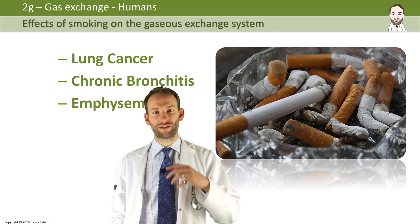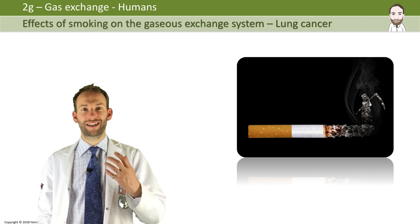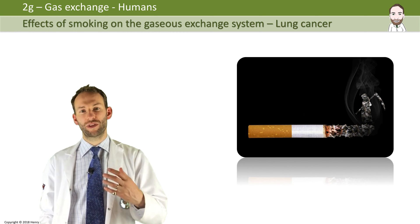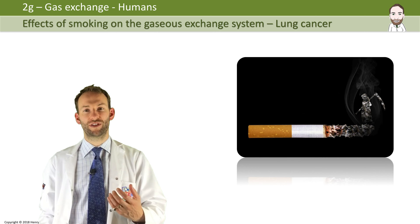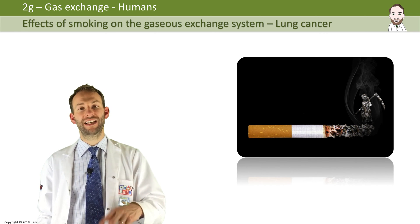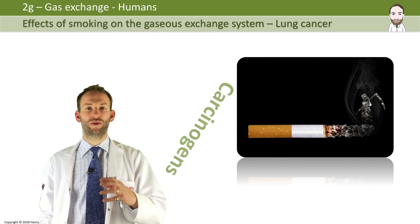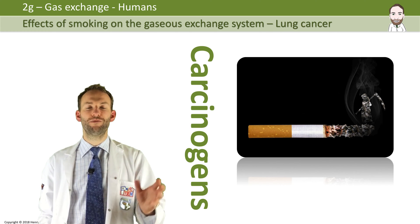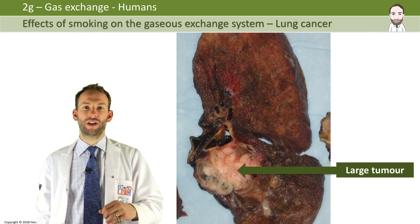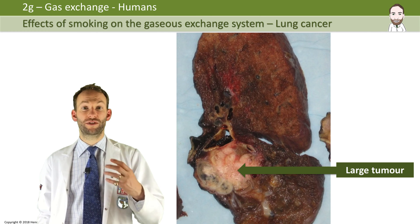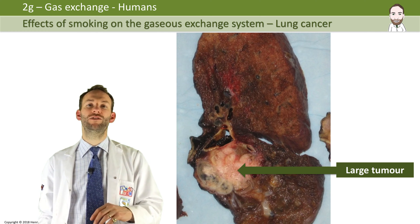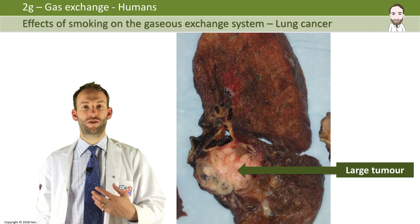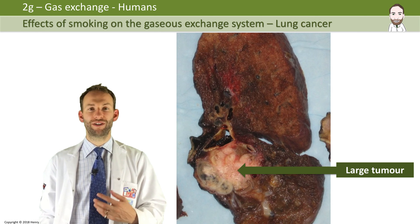Starting with lung cancer — tobacco smoke and tar contain loads of chemicals, and some of these chemicals are cancerous. They can cause your cells to mutate and tumors to grow. We call these cancer-causing chemicals carcinogens. You can see in this picture this huge tumor that has formed in this diseased lung. You can also tell it's a smoker's lung because it's so black from all the tar inside.